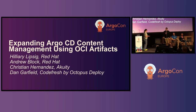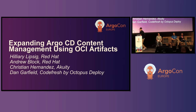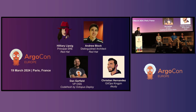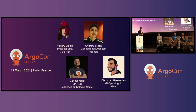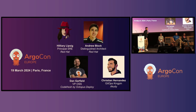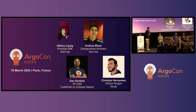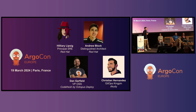I'm going to kick this off — it's kind of my baby. I want to talk to you about OCI artifacts. My name is Andy Block, I'm a distinguished architect at Red Hat. I've been working in the GitOps and Argo space for three to four years, done a lot, and worked with many folks here on the stage and in the community.